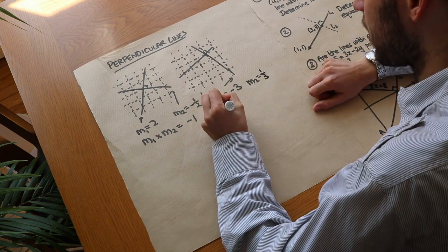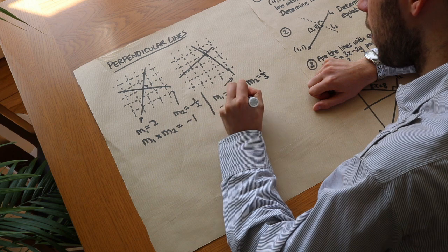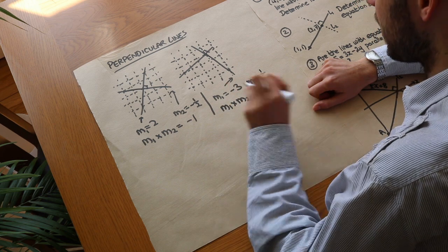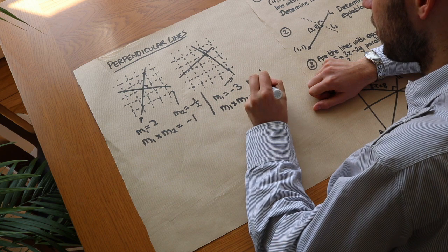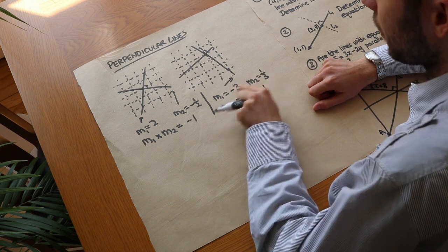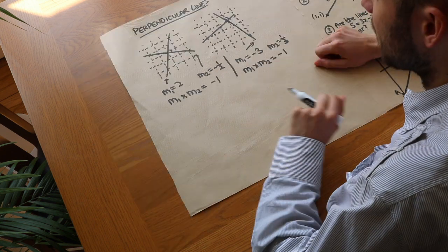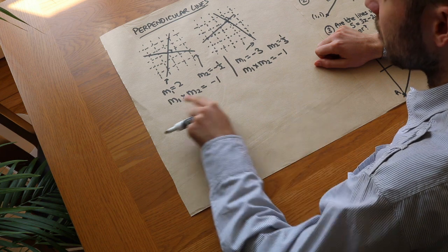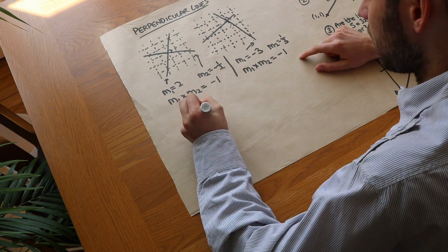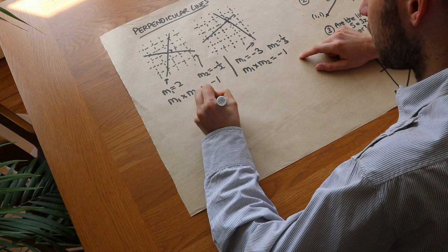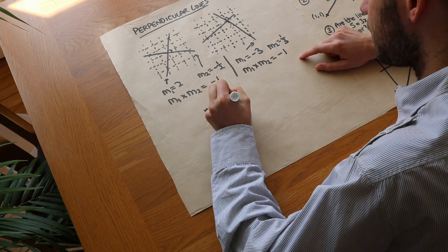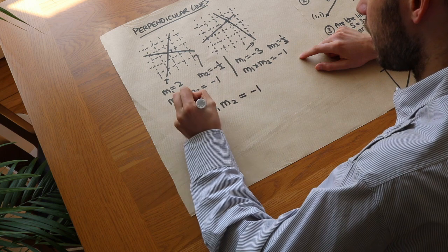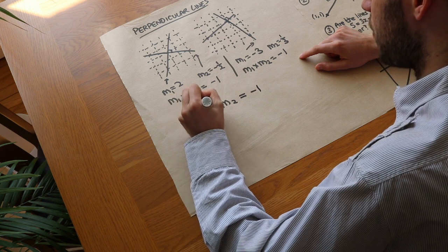Again let's multiply them together: minus 3 times a third. Negative times positive is negative, and we get minus 1 again because a third of 3 is 1. That's always the case — if you have two perpendicular lines, the product of their gradients is always minus 1. So M1 times M2 is always equal to minus 1 if the lines are perpendicular.